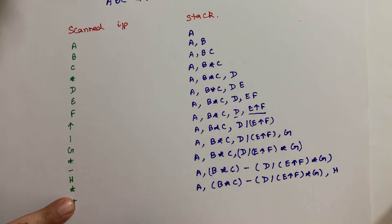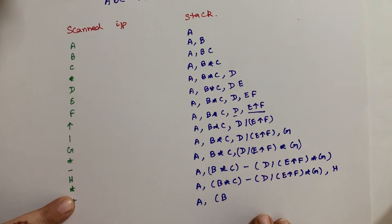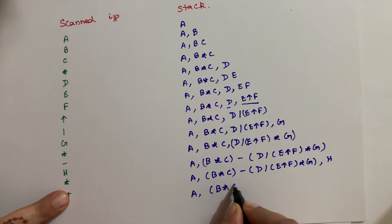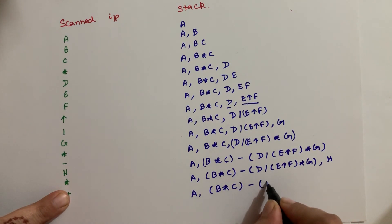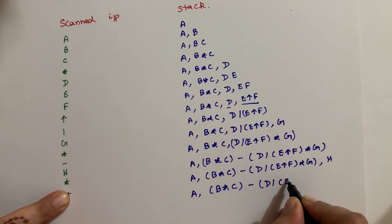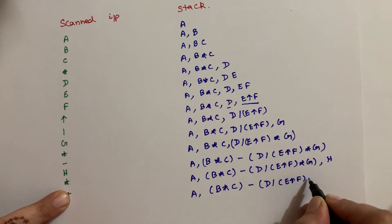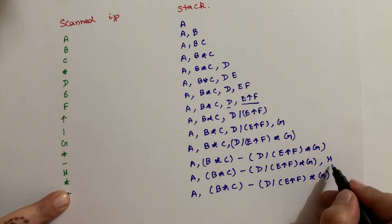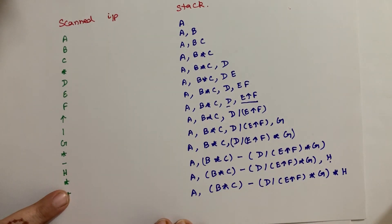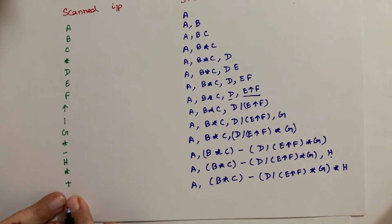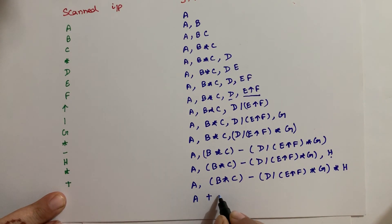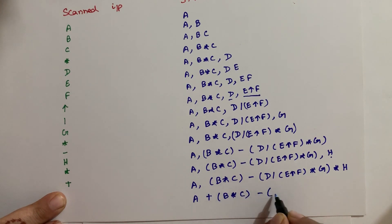Then multiplication comes — so the result becomes: A into (B into C minus D division E raised to power F into G) into H. The last operator is plus, so the final infix expression is formed. This was the conversion of a postfix expression into infix using a stack.